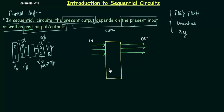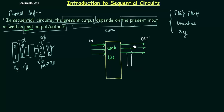For example, this is my combinational circuit — this is my present input and this is my present output, so the present output depends only on the present input. Now if I want to convert this combinational circuit into a sequential circuit, what do I have to do? I have to take all three outputs and store them — I have to store them.